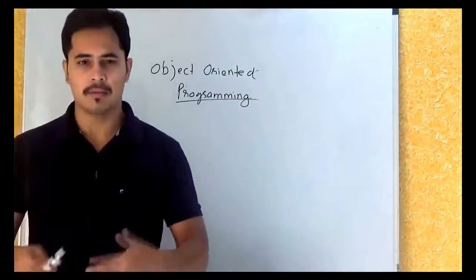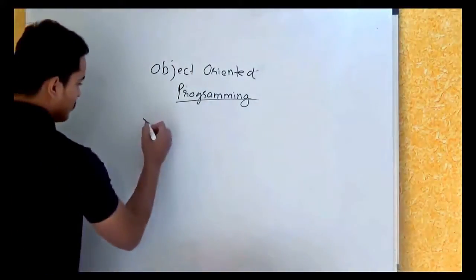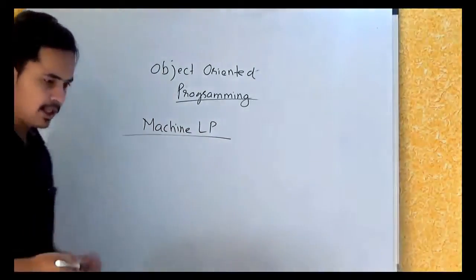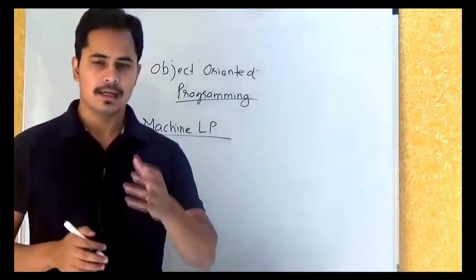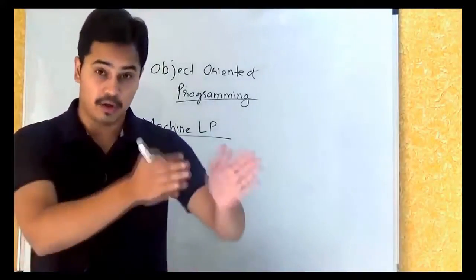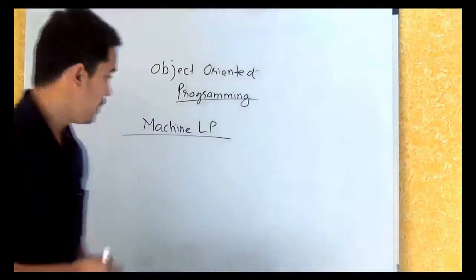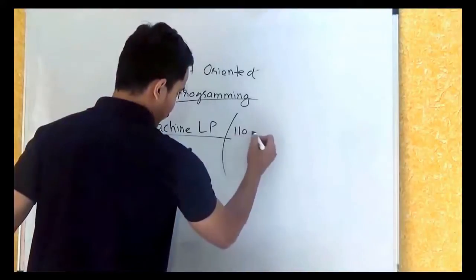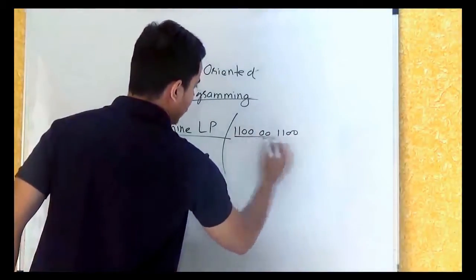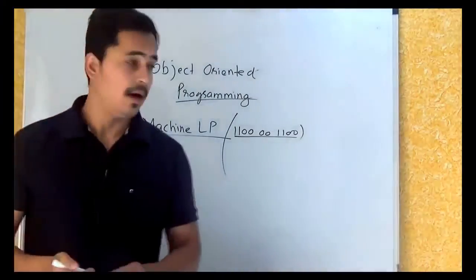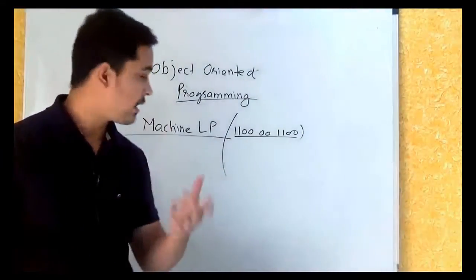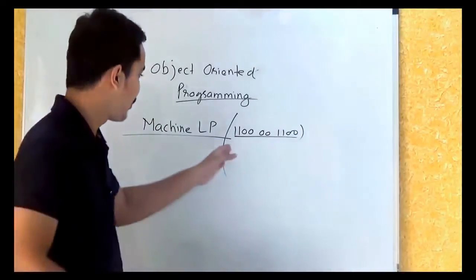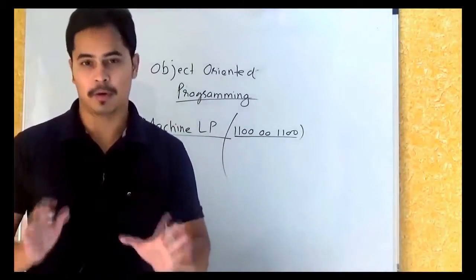At the beginning of the computing era, programming was usually limited to machine language programming. Machine language programming means a set of instructions aimed at a particular machine — a particular processor, to be honest. Machine language codes are nothing but sequences of bits. Imagine if you are developing an Android application and I ask you to write code in machine language — that means you have to write sequences of bits. Will that really be possible? No.